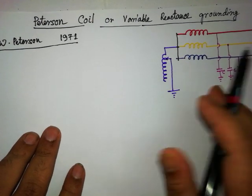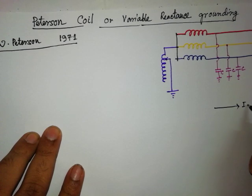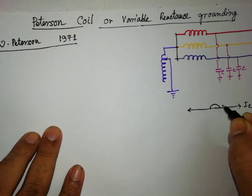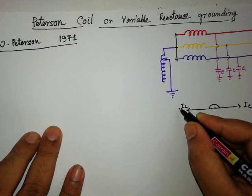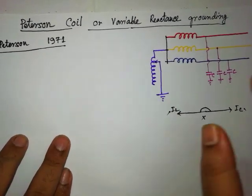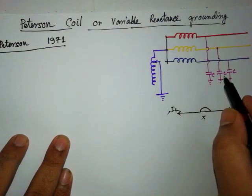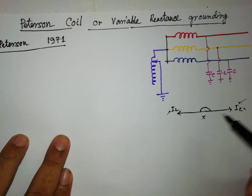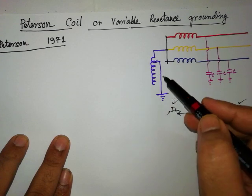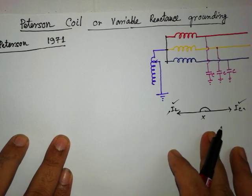If the capacitive current is here, then the inductive current will be in 180-degree phase shift with it. So if IL and IC are the same, they will cancel each other. By varying the inductance, we need to make sure that the charging current (the capacitive current) and the inductive current through the variable inductance are equal. That is our main motto.